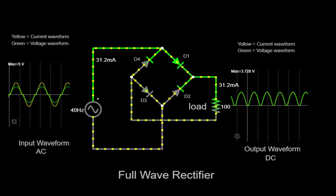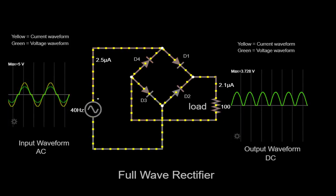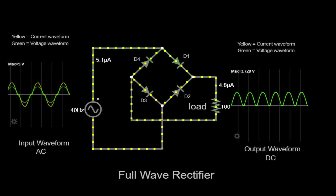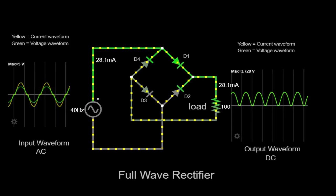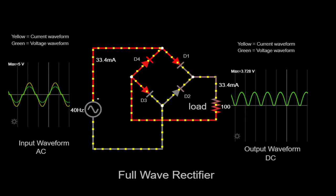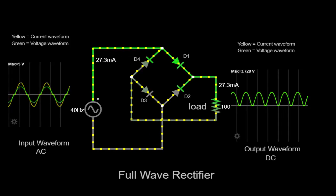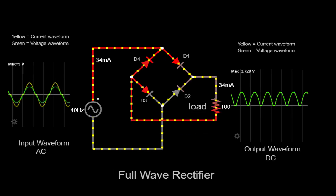It is important to note that while the output waveform is rectified, it may still contain small ripples or variations. These ripples arise due to imperfections in the rectification process and the inherent characteristics of the components involved. However, these ripples can be further minimized by utilizing additional circuit elements, such as capacitors, to smoothen the output voltage.